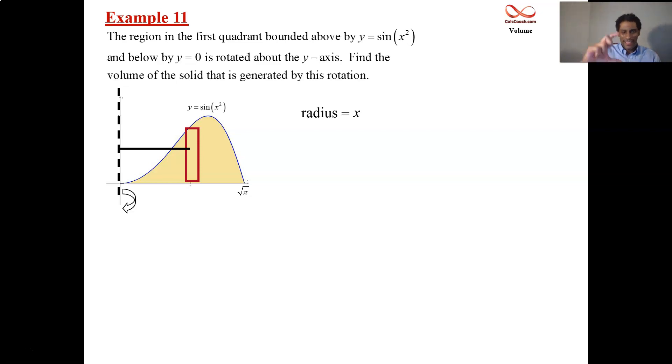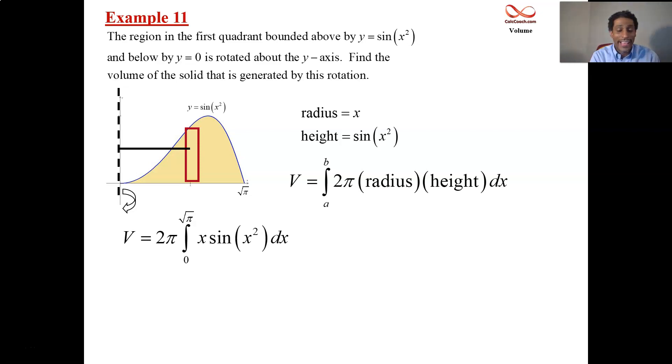How tall is the rectangle? The height is the function, sine of x squared. So the formula for volume by shell method is 2πrh that you integrate. The 2π goes on the outside, and then we have the radius and the height. The radius is x, the height is sine of x squared, and the bounds are 0 to root π.